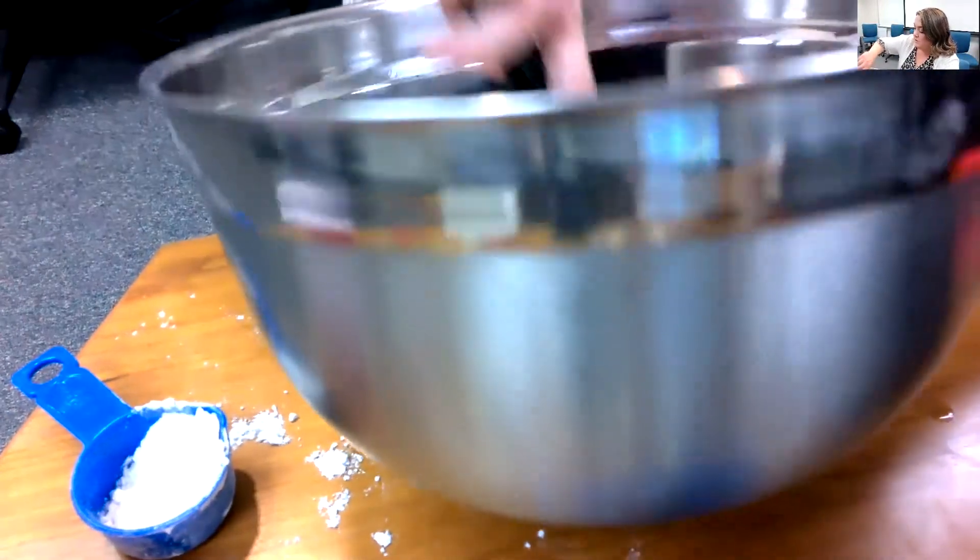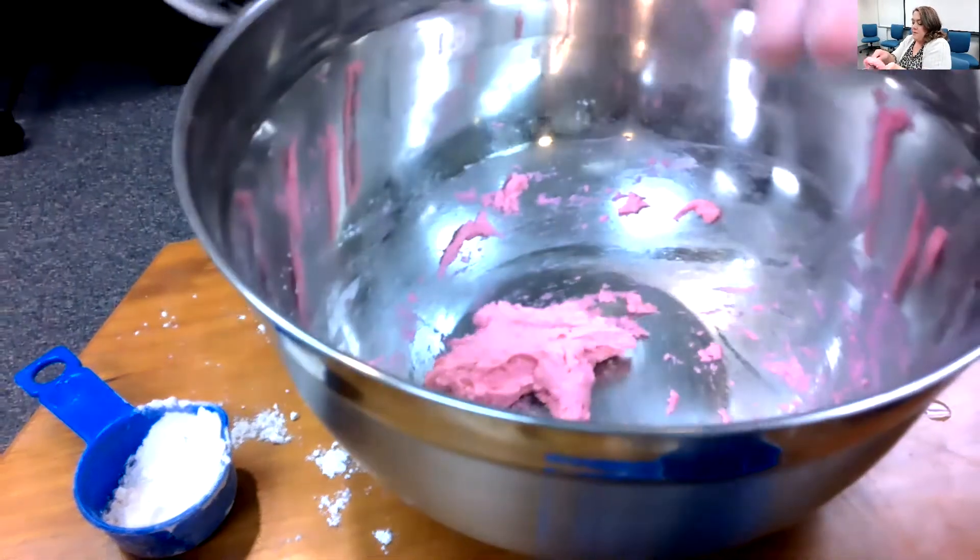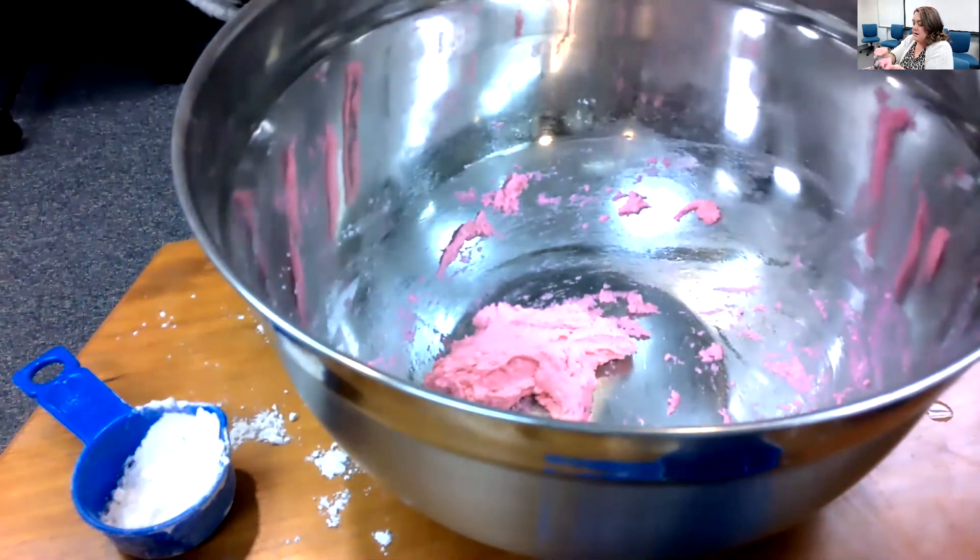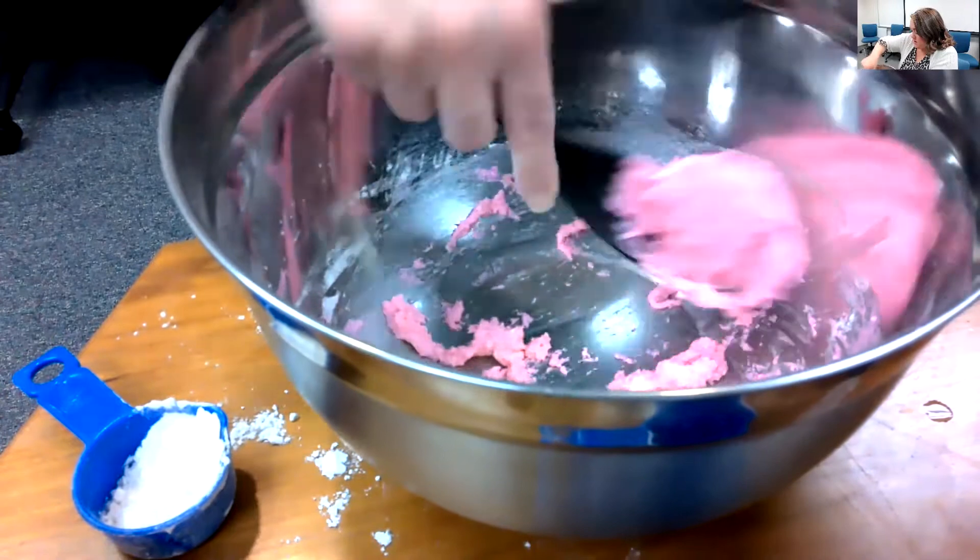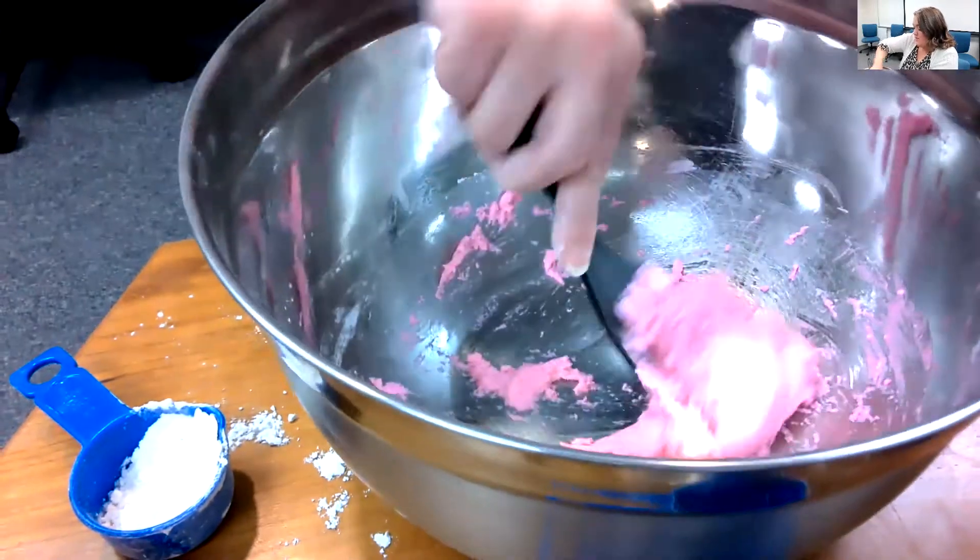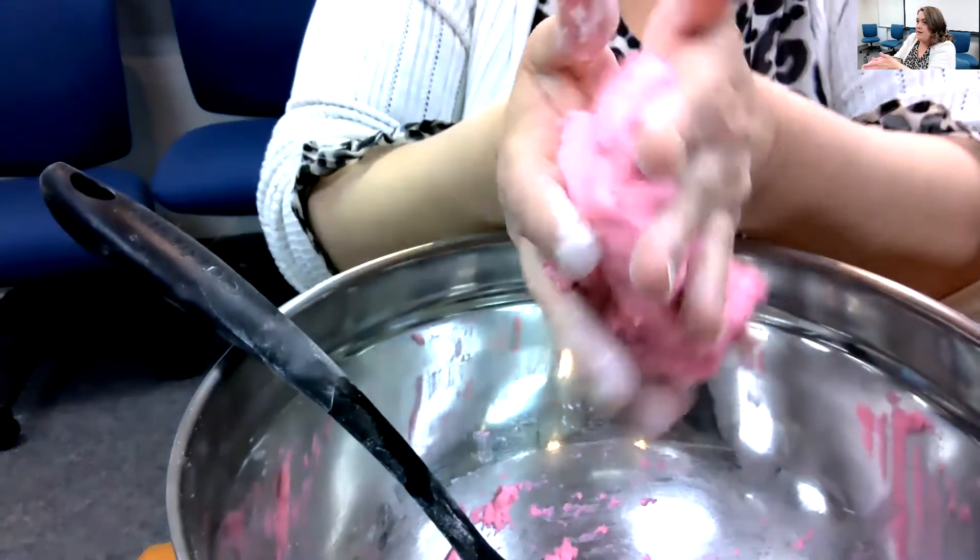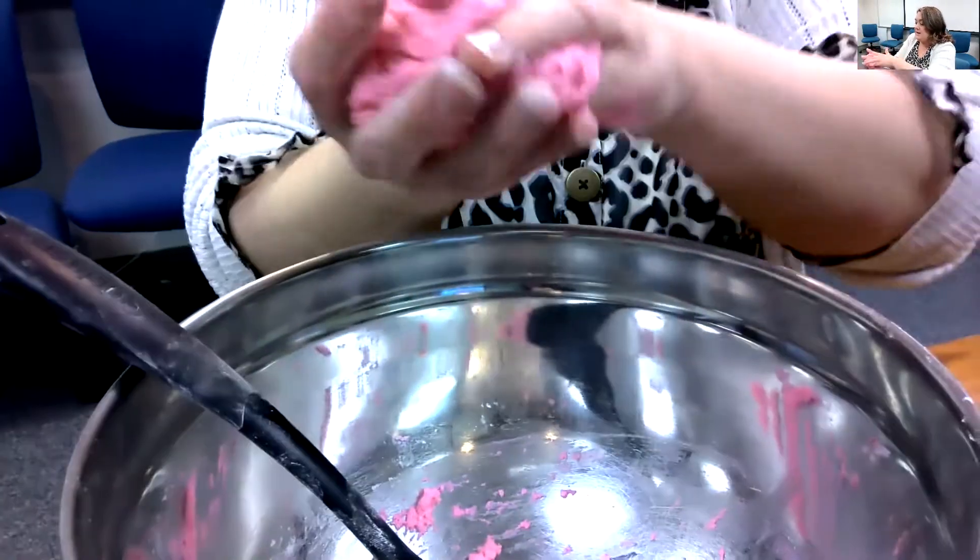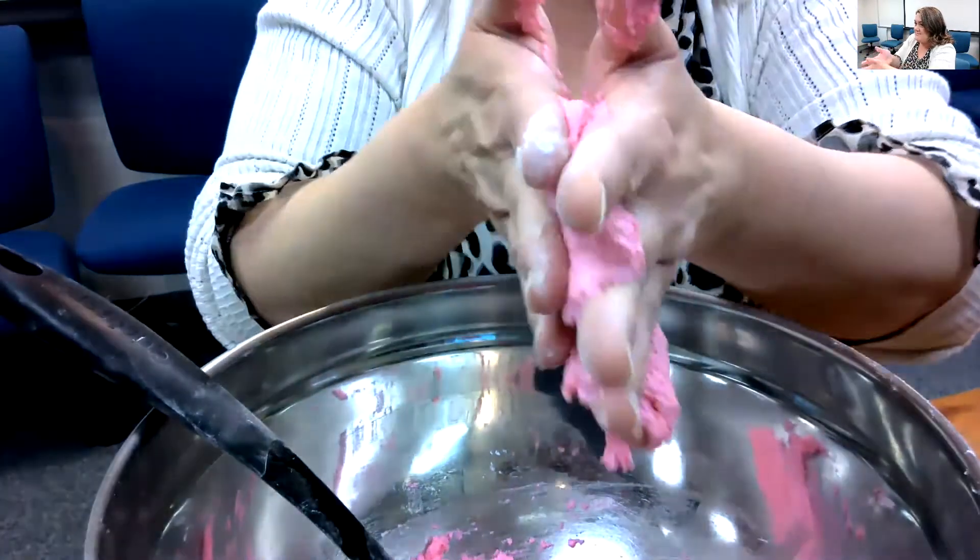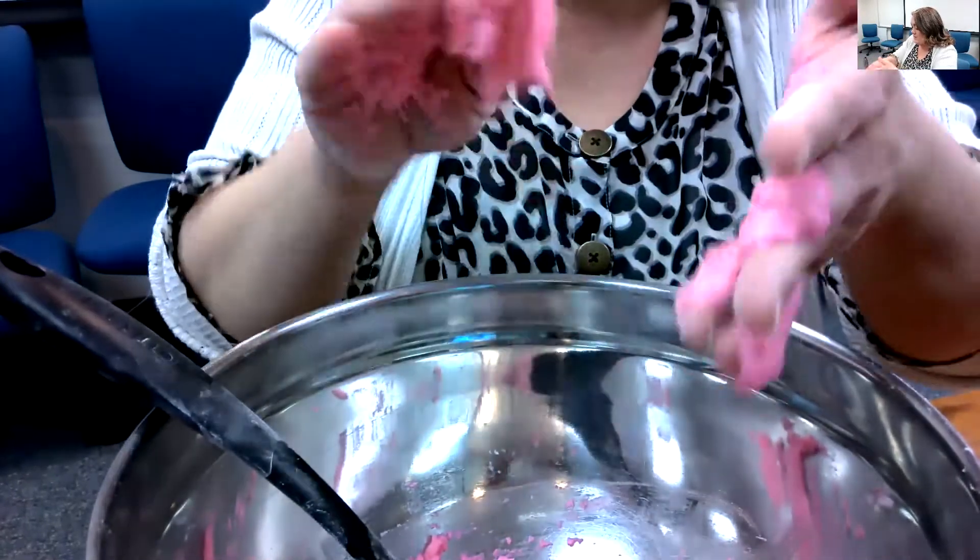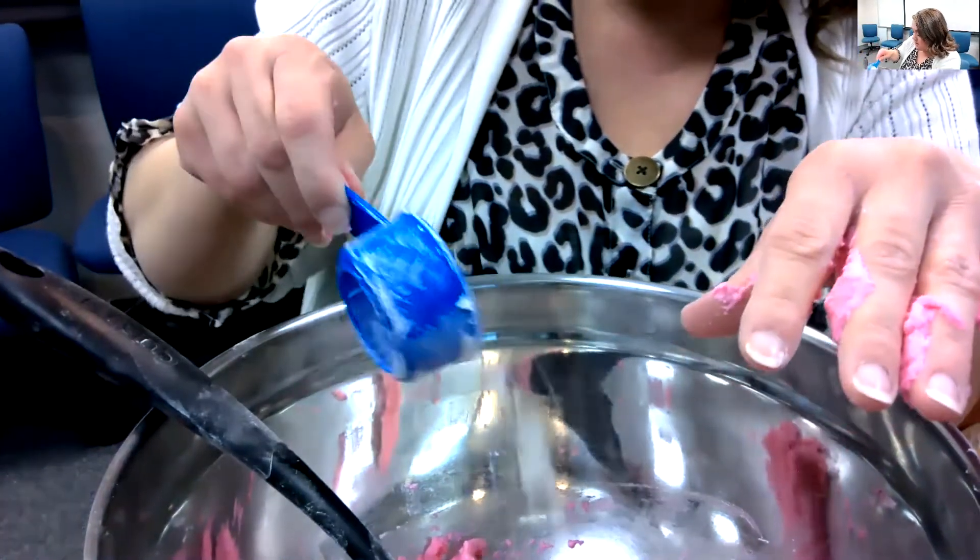The cool thing about this is you can mix colors and make any color Play-Doh you need for whatever special project you want to work on. I'm going to put this on my hand. Here we go. Look at that. So it's a little sticky, right? Is that the right consistency? I don't think so. I think we need to add some more flour. Let's do that. Good thing I got some ready to go right here.